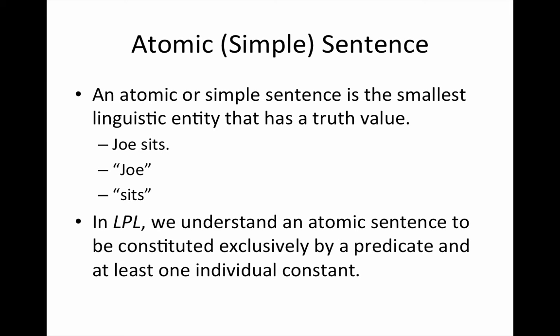Let's continue with the discussion of the first point about an atomic or simple sentence. It's the smallest linguistic entity that has a truth value. In logic, we deal with sentences that are either true or false. So an atomic or simple sentence has to be a sentence that is either true or false. Typically, we're going to think of the simple sentence as corresponding to some state of affairs. For example, if it's true that the Joe in the sentence 'Joe sits' is actually sitting, the sentence is true — false if it's not the case that Joe sits.